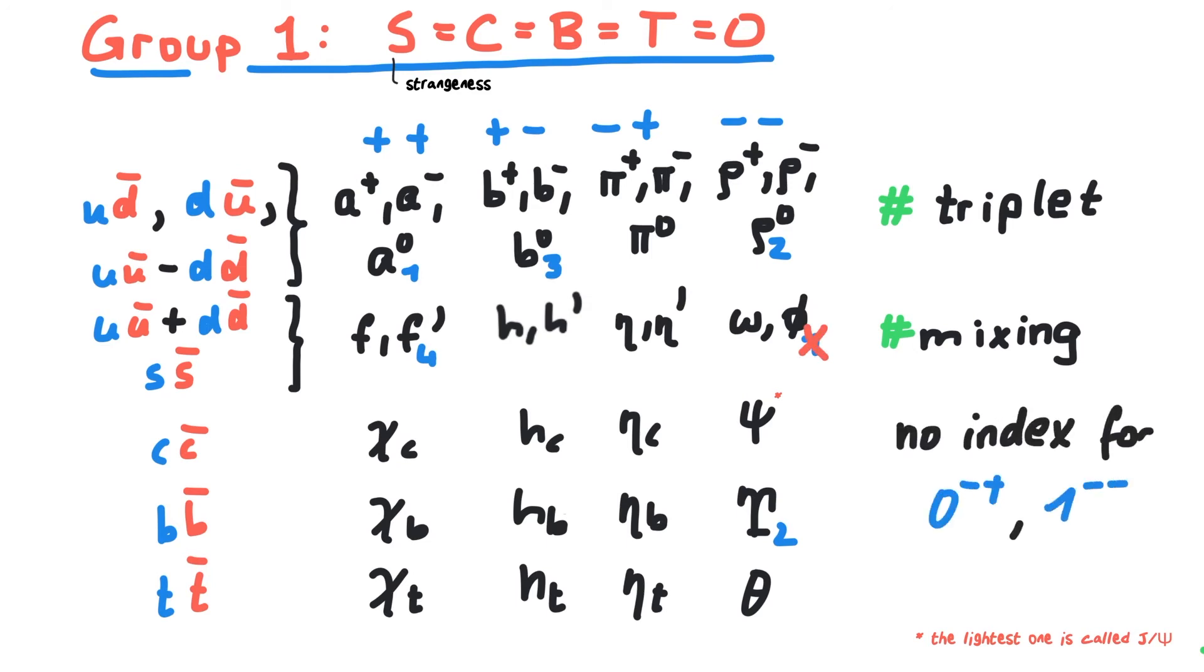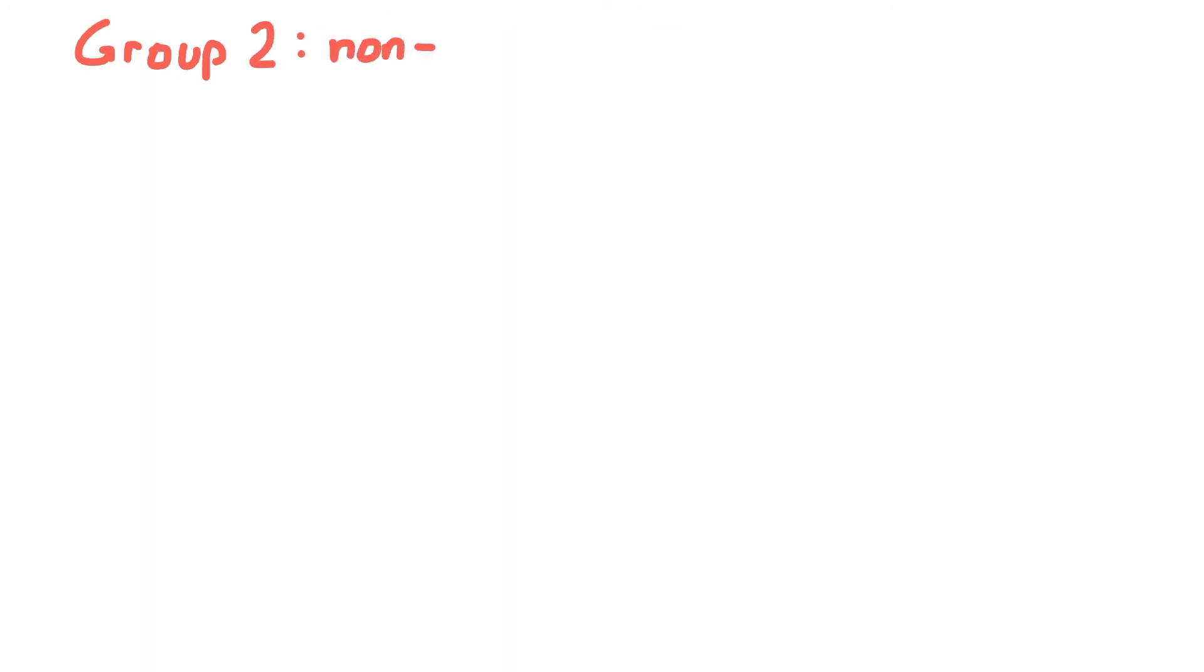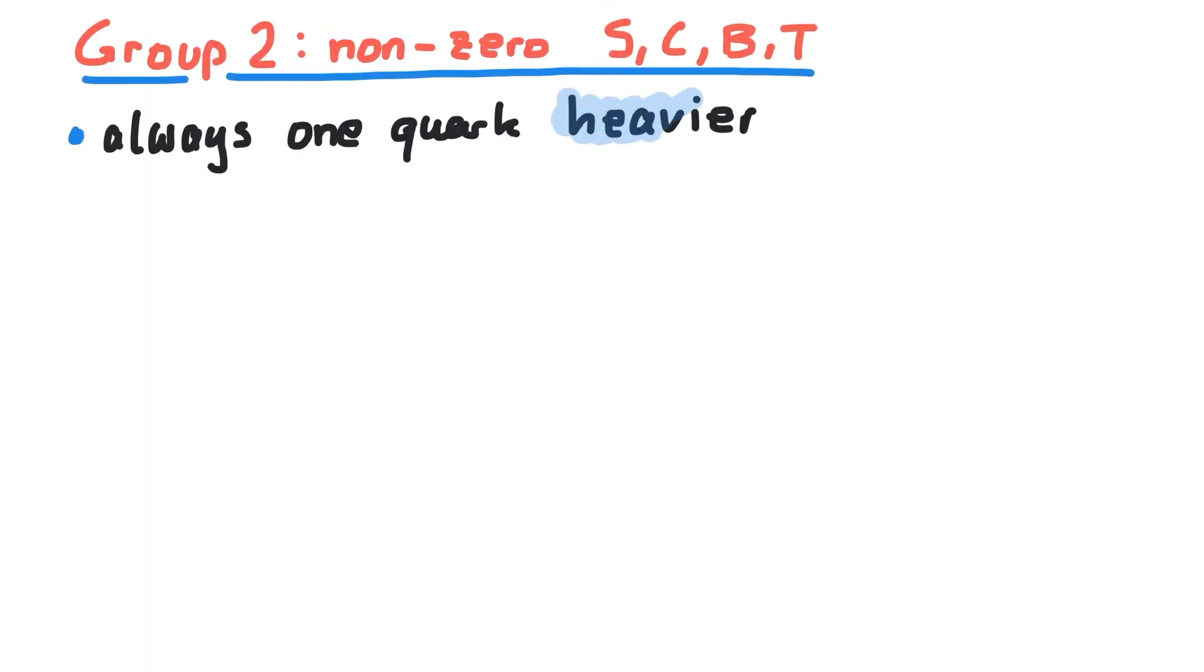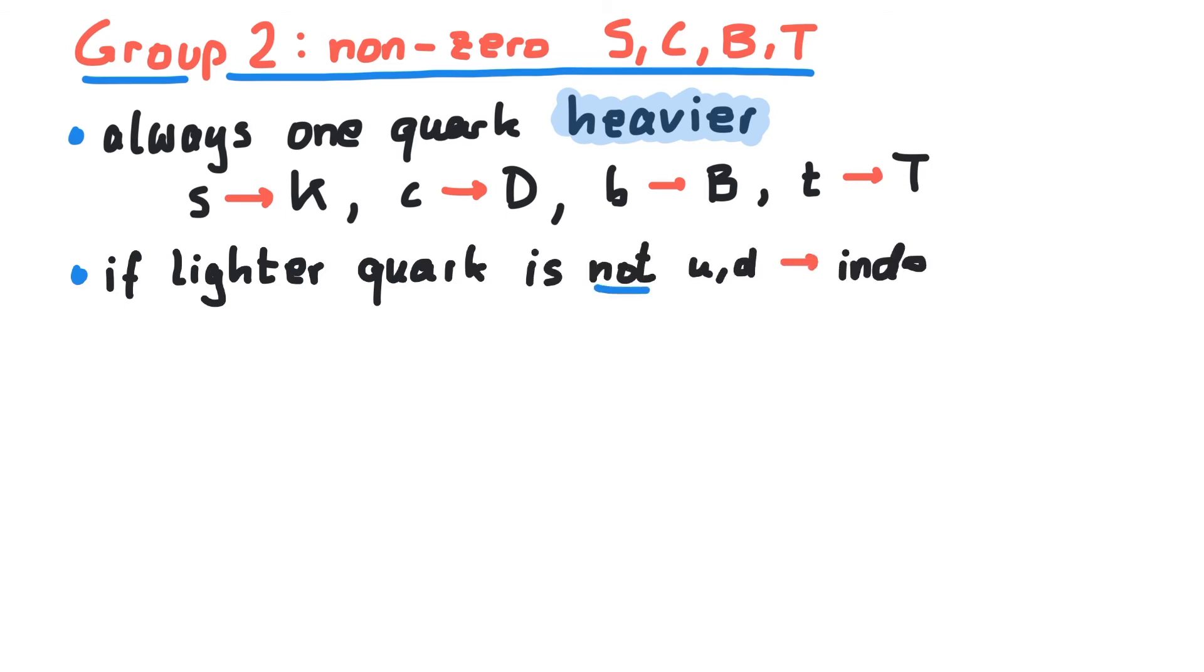Now let's talk about mesons with heavy quantum numbers. For these mesons, one quark is always heavier than the other. For example, a charm quark cannot be paired with an anti-charm because their charm quantum number would cancel and it would belong to the previous class of mesons. We now assign a name corresponding to the heavier quark in the meson. If the lighter quark is not a U or D quark, we denote it with an index.